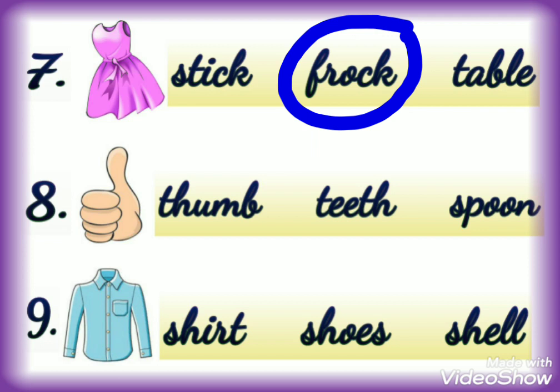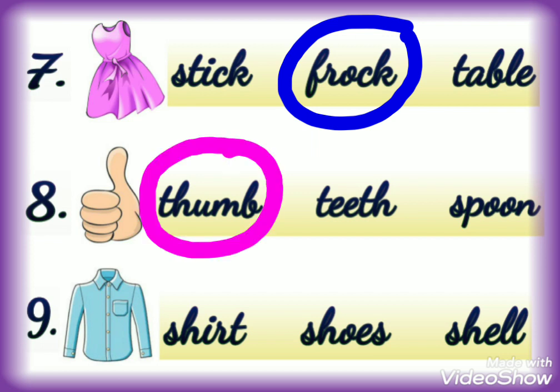Number 8 — this is a picture of thumb. We'll read all the options. First option is T-H-U-M-B, thumb — yes, we have got the correct answer, so we will circle this word. The next option is T-E-E-T-H, teeth — this is not the right answer. Third option is S-P-O-O-N, spoon — this is also not the correct answer. So we'll go to the next number.